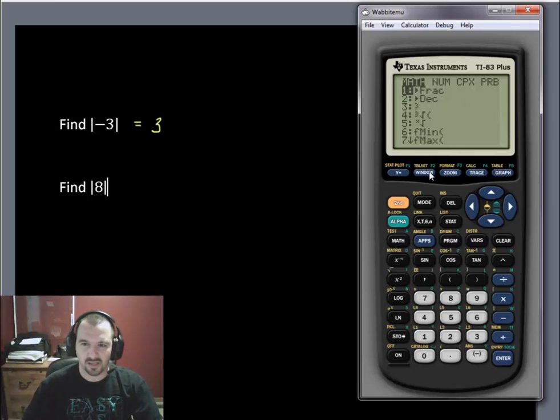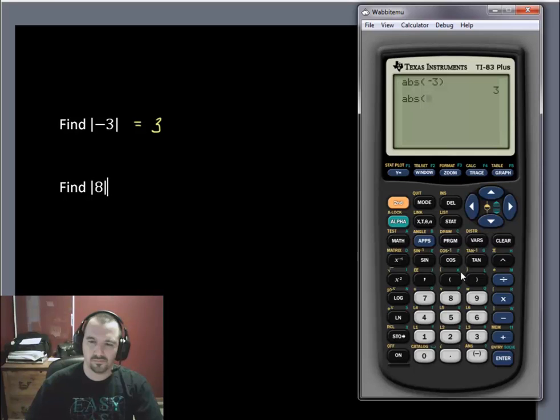So we press the math button. That gives us our little set of menus. We scroll over to num for number. We press enter for absolute value. Or you can press the number 1, and it'll enter absolute value directly on the screen. And we put in 8, close the parentheses, and hit enter. And we get 8.